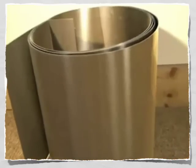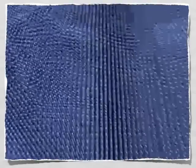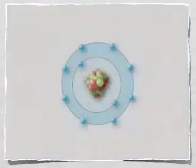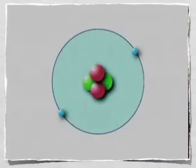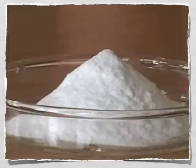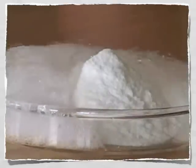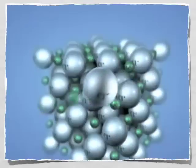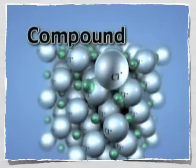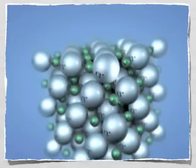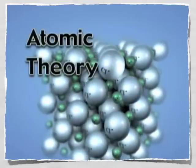Dalton concluded that pure substances called elements are made of extremely small particles called atoms. He stated that atoms of the same element are exactly alike, and the atoms of different elements are different from one another. Dalton also stated that atoms could not be changed into different types of atoms by chemical reactions. He also theorized that compounds are formed by joining the atoms of two or more elements. These ideas served as the basis for what is known as the atomic theory.